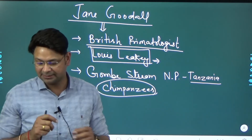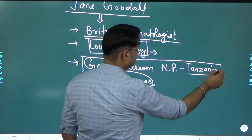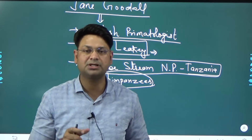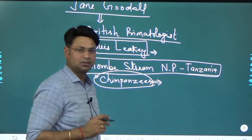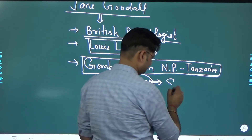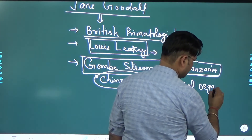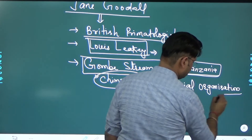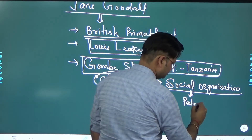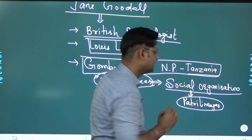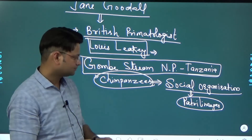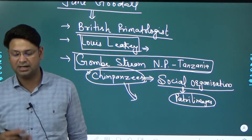In Gombe Stream National Park she observed chimpanzee behavior, and whatever her learnings are they become very important for understanding humankind today. She studied that chimpanzees have a unique and elaborate social organization. Chimpanzee groups are divided into various patrilineages - different patrilineages do exist. You can say male authority prevails in chimpanzees.